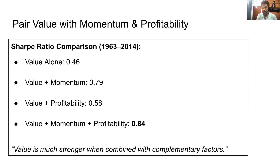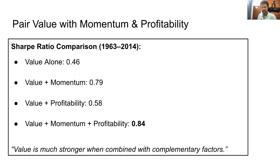The research paper favors the ranking approach — combining value with a tinge of quality and momentum works really well, better than pure value alone. Adding momentum to value increases the Sharpe ratio from 0.46 to 0.79. Adding value plus profitability (quality) raises it from 0.46 to 0.58. Combining value, momentum, and profitability together achieves a Sharpe ratio of 0.84. These three factors are complementary and combining them drives overall improvement.